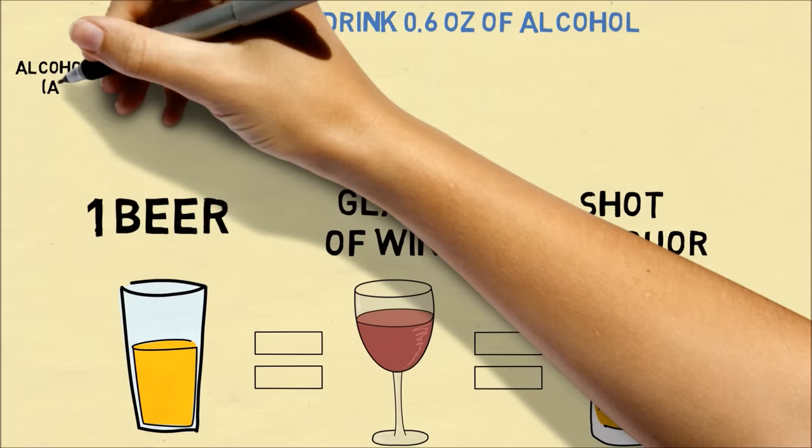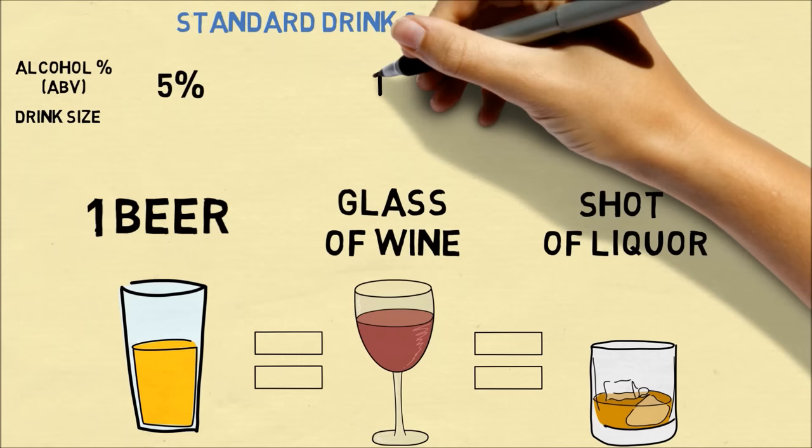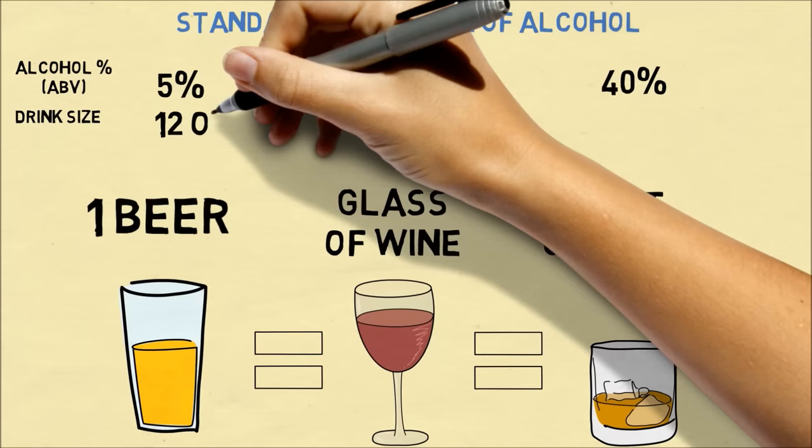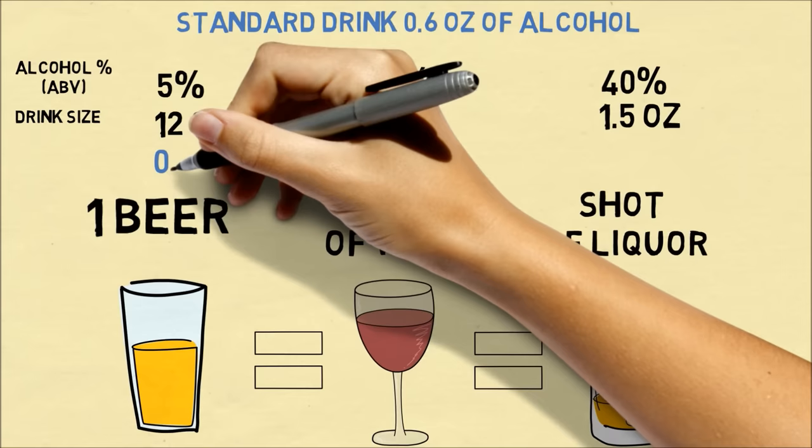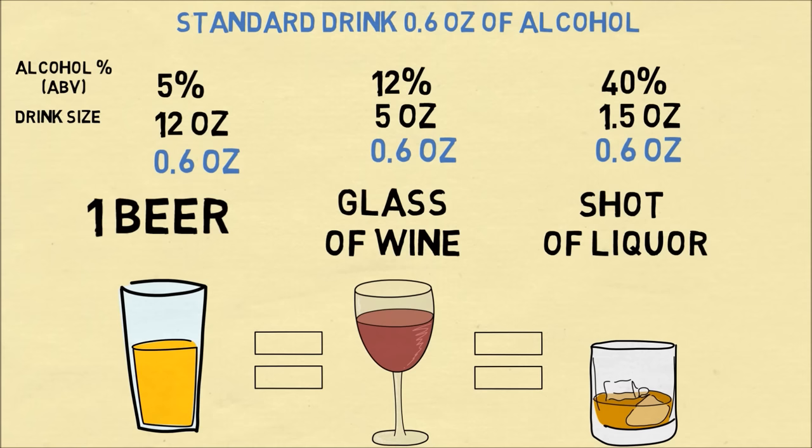We can verify this by looking at the alcohol percentage of each of the drinks, and we'll also write down the standard serving size of each of these drinks. When we multiply the alcohol percentage by the drink size, we find that each of these drinks contains the standard 0.6 fluid ounces of alcohol. And this is great for theory.